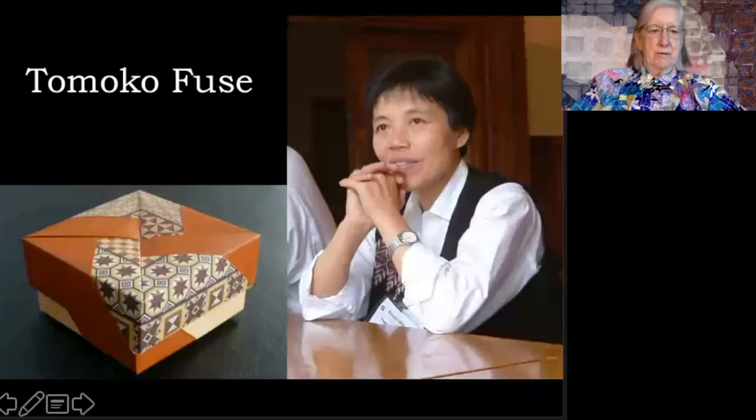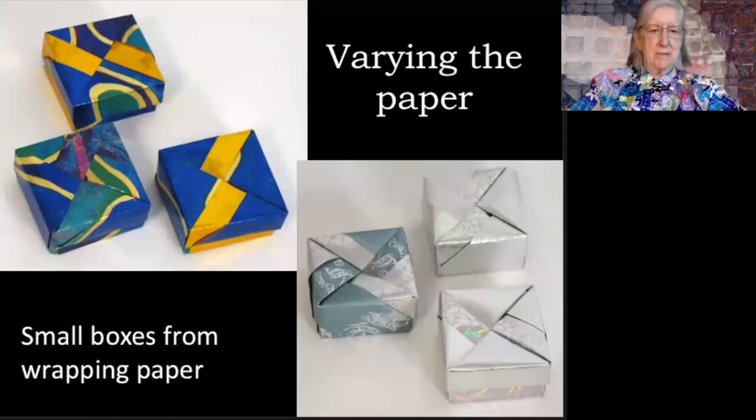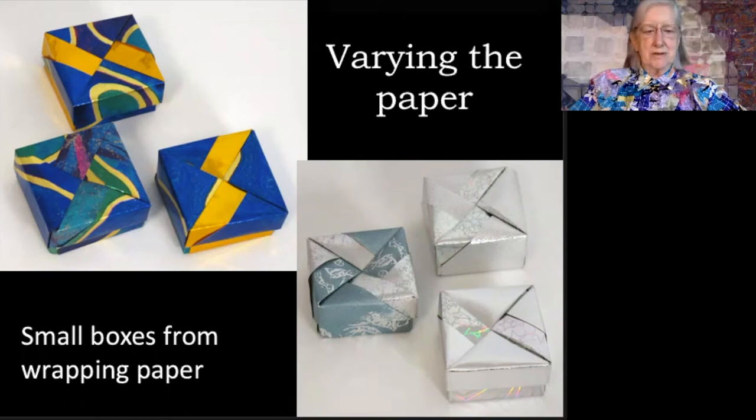A well-known contemporary artist from Japan is Tomoko Fuse, and probably she's most widely known for her elegant little box designs made from four pieces of paper for the top and four for the bottom. I really enjoy playing with those in all different kinds of paper. I cut up squares from wrapping paper and find combinations that I enjoy to make her boxes.